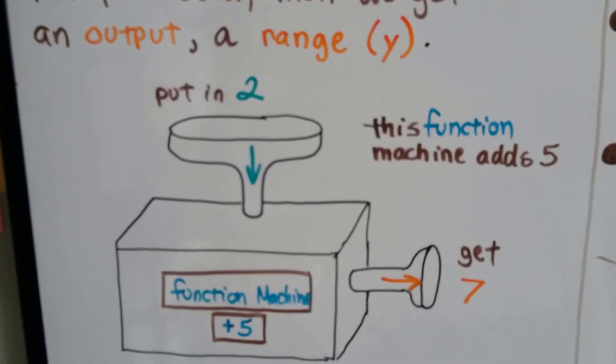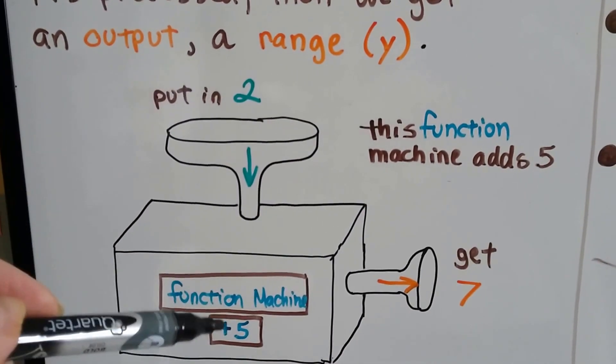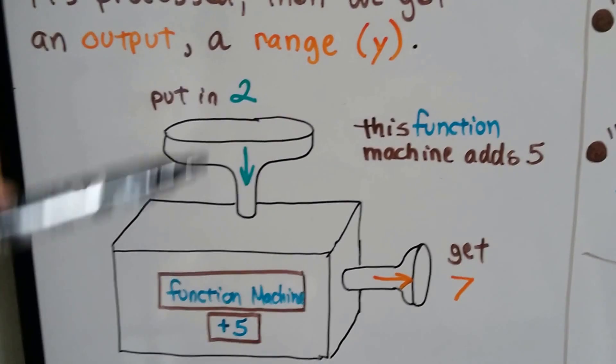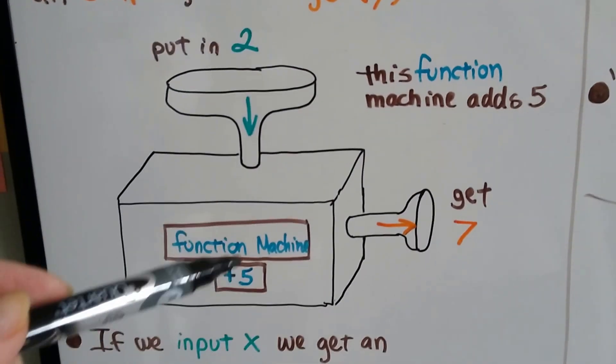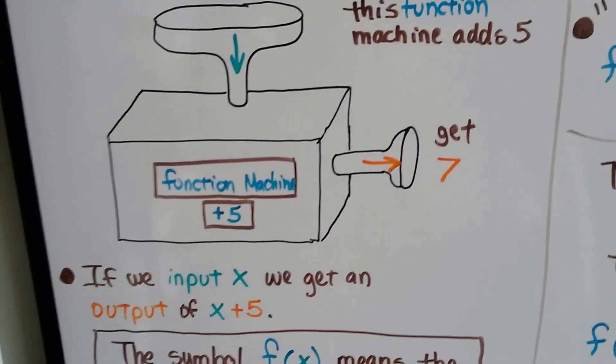So if we get a little machine and our function machine was plus 5, whatever we put into it is going to add 5. If we put in a 2, it's going to add the 5, we're going to get a 7. If we put an x in here, we're going to get x plus 5. That would be our function value.